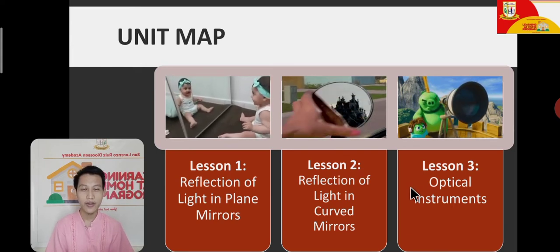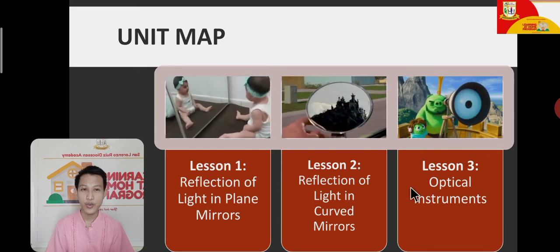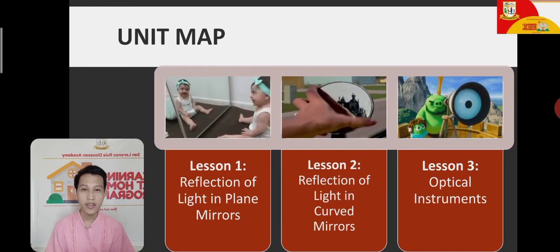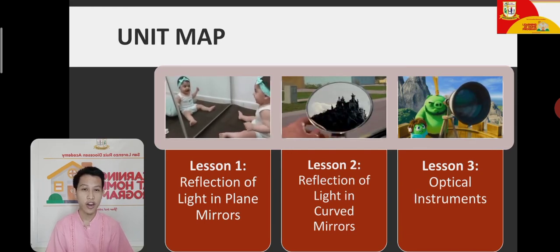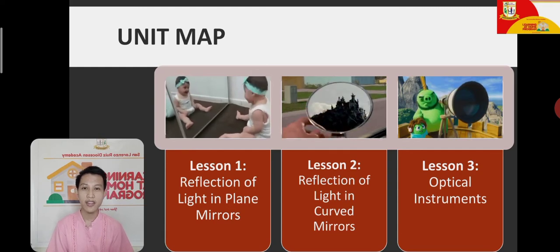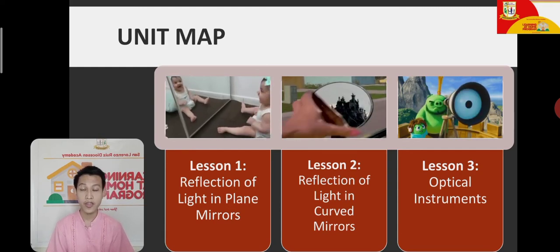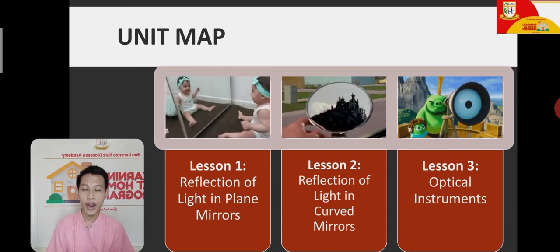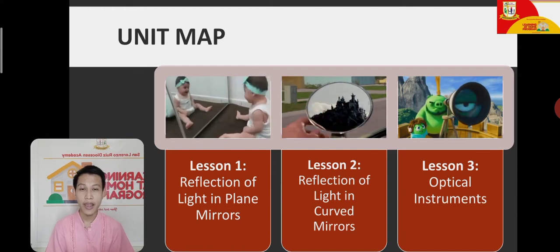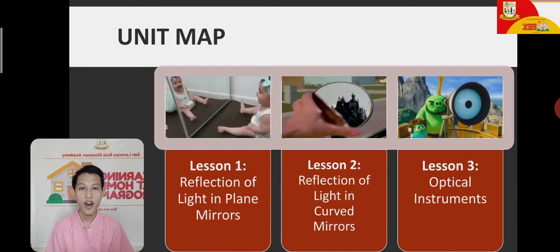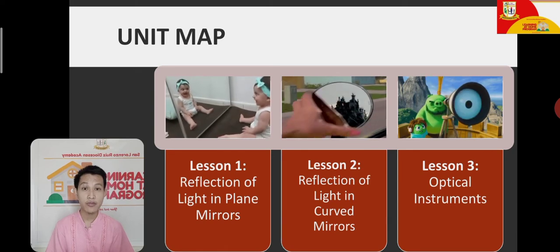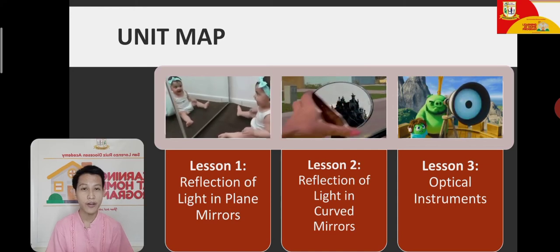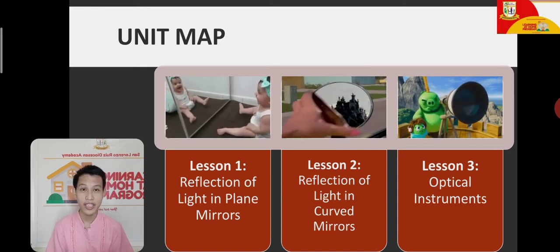In our last video, I discussed lesson number 2, which is all about reflection of light in curved mirrors. You learned that there are two types of curved mirrors: the concave and the convex mirrors. For convex mirrors, the images formed are always virtual, upright, formed behind the mirror, and are always smaller than the object. Examples of convex mirrors are the side mirrors and the mirrors found in convenience stores, or the security mirrors.